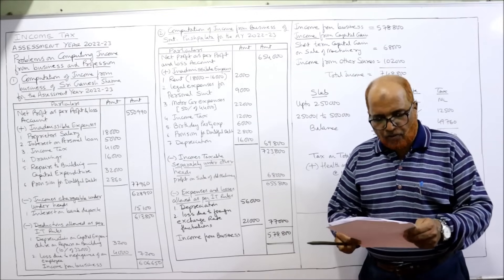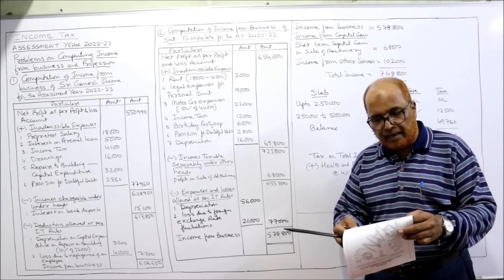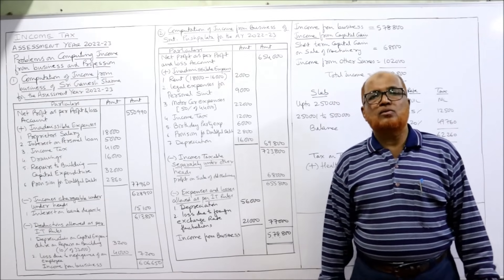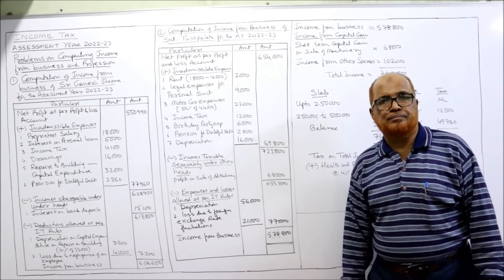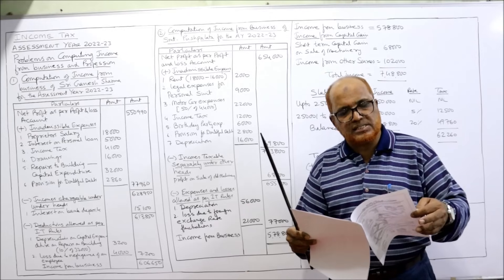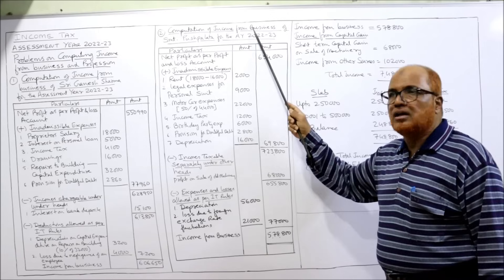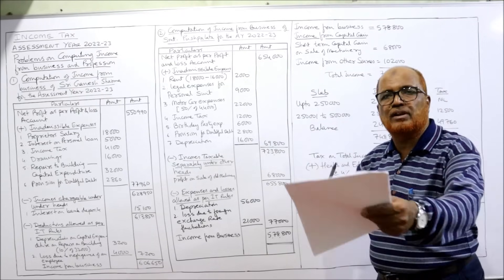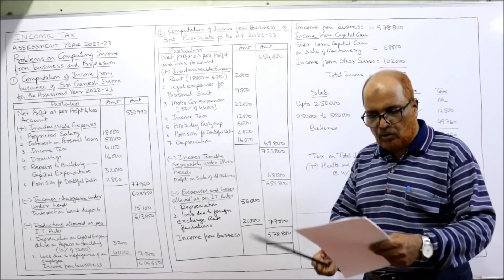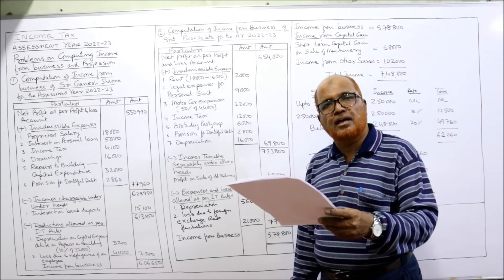Now the second problem: following is the profit and loss account of Srimathi Pushpalata. Compute income from business and calculate tax liability for the current assessment year. So here we have to compute the income from business and also calculate the tax liability. The net profit as per profit and loss account is 6,54,000. Computation of income from business of Srimathi Pushpalata: Net Profit as per P&L account — 6,54,000.